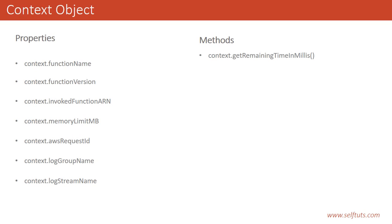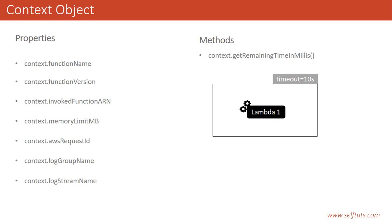In the methods section of the context object, the most important one is getRemainingTimeInMillis. Suppose your Lambda function has a timeout of 10 seconds — timeout is a configuration set when creating the Lambda function — meaning if there is no response within 10 seconds, the function will be aborted. This is important because you are charged for the amount of time your Lambda function is running, so providing a high timeout means you will be charged more. A better approach is to set a minimum timeout. You can get the remaining time in milliseconds using this method.